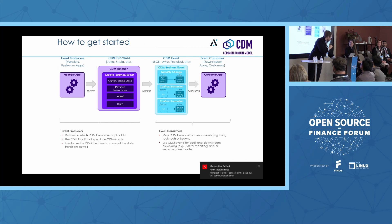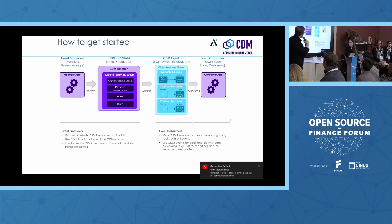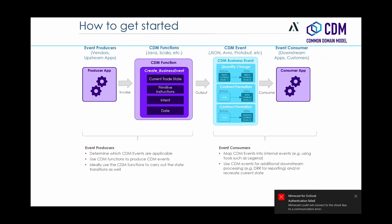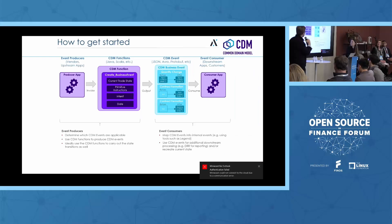As for how to get started, I like to think of two different roles: event producers and event consumers. Event producers are vendors or upstream systems using CDM to represent events. Event consumers are trying to consume those events — if you're a vendor, this is your customer; or if it's an upstream app, this is a downstream app making sense of those events. From an event producer perspective, first look at which events are applicable — CDM is about representing trade lifecycle state transitions.